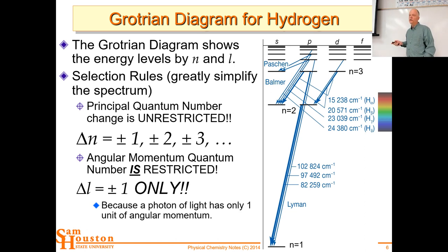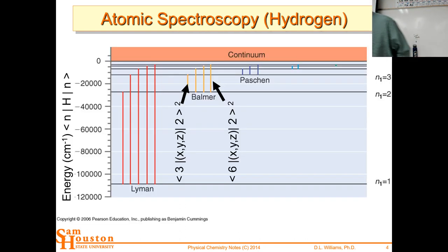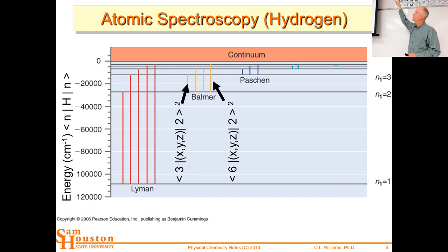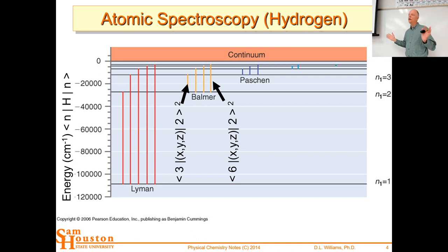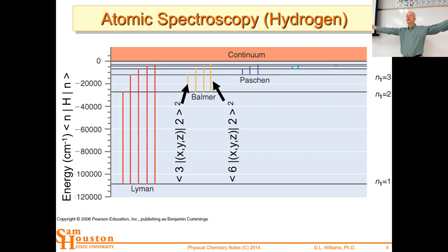Notice the spectroscopic results and the selection rules. These are the energy levels — N=1, N=2, N=3. We can go from three to two, four to two, five to two, or three down to one, four down to one. So the selection rules on n are unrestricted — you can have any delta n. That hasn't been the case in the past; for the particle in the box, delta n was plus or minus one, three, five. But for an atom, we can go from the fifth shell down to the first shell. So the selection rules on delta n are unrestricted.